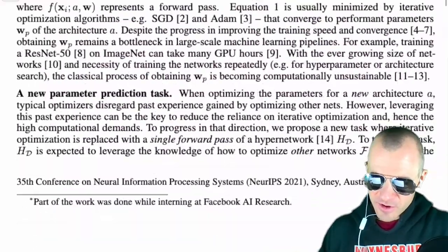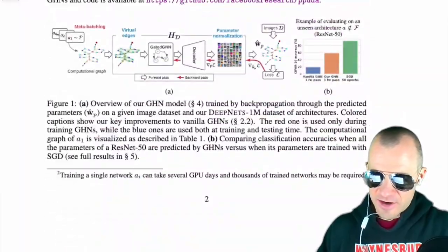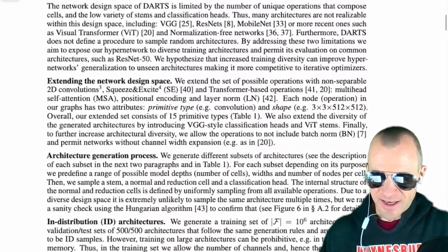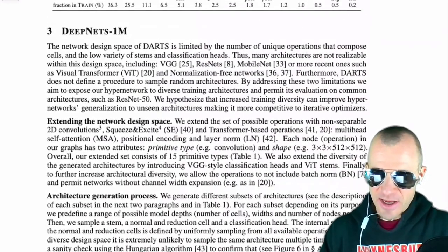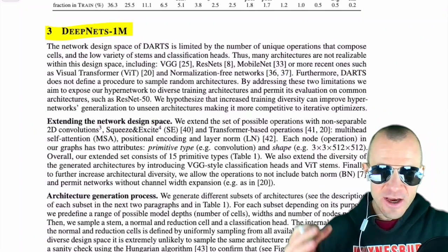The numbers aren't great, but they are certainly good for never having trained. There is a bit of a caveat because the hyper network has been trained on that specific dataset. Maybe we'll go into what you exactly train this on. You introduce a new dataset — the DeepNets-1M dataset. Could you tell us a little about this? This is essentially the basis for learning this hyper network.